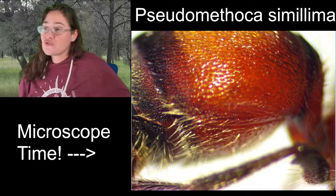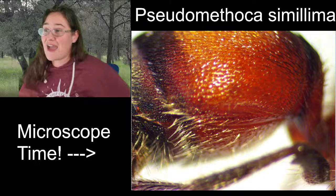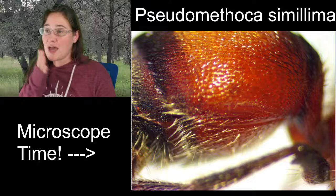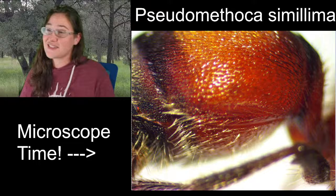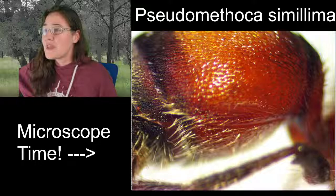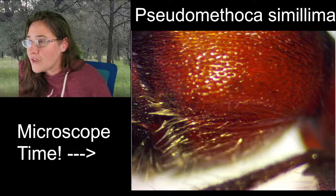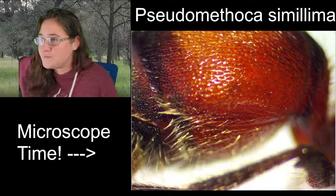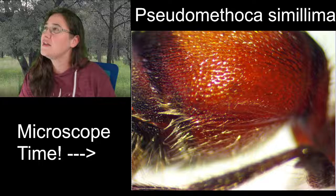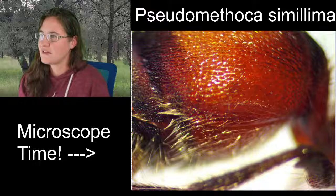I believe most female velvet ants do not have wings and most males do. Sometimes when you have a male velvet ant and you're just looking at that one individual, it's hard to determine if you have a velvet ant or if you have something like a scoliid wasp — there are a handful of different wasps that look very very similar.